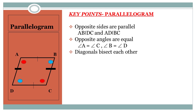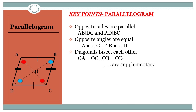Third property: diagonals bisect each other. The diagonals AC and BD intersect at point O. As per the property, OA equals OC and OB equals OD.